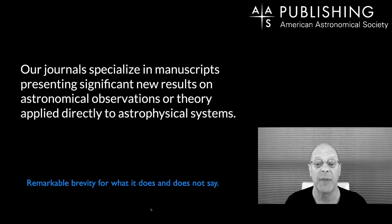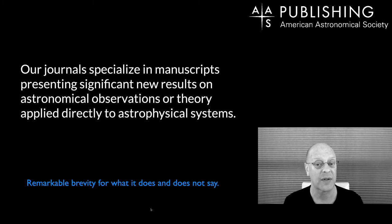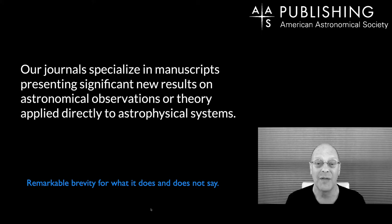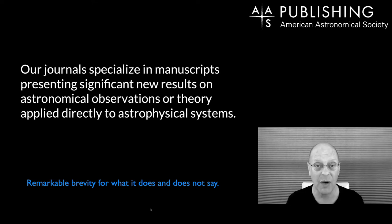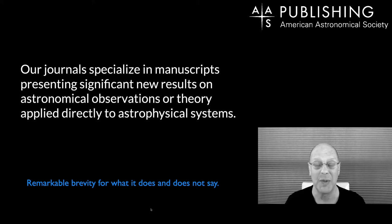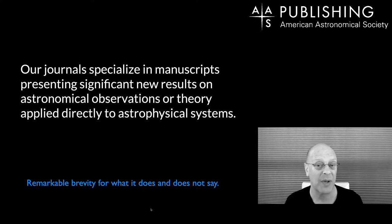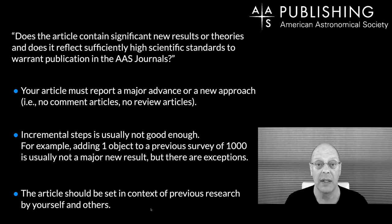Our journals specialize in manuscripts presenting significant new results — and that phrase will keep coming up — on astronomical observations or theory applied directly to astrophysical systems. One of the things this does not say is that we only publish correct results. Significant new results is the primary metric for publication, in part because we don't know what's going to be true five years from now.